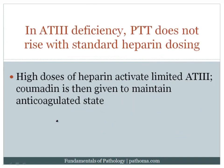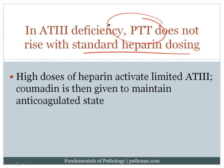An interesting finding in antithrombin III deficiency is that giving heparin at a standard dose will not cause the PTT to rise. This is because heparin works by activating antithrombin III — if there is no antithrombin III, heparin has no effect. What you then do is give high-dose heparin to activate the limited antithrombin III present, allowing the patient to reach an anticoagulated state. You then give coumadin to maintain anticoagulation. After passing the window of concern for coumadin skin necrosis, the high-dose heparin can be stopped.